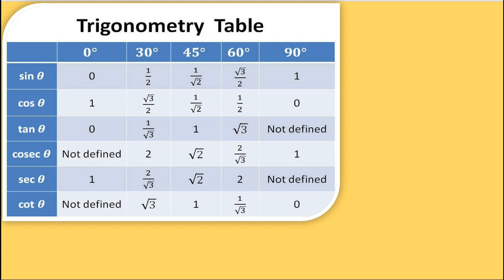First, the trigonometric table — it's very important for shortcuts. Sin 0° is 0, sin 30° is 1/2, sin 45° is 1/√2, sin 60° is √3/2, and sin 90° is 1. It is very simple to remember.